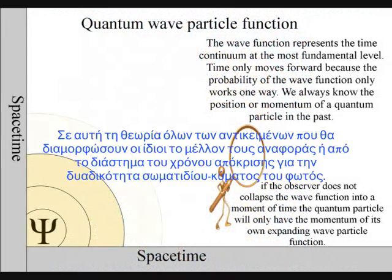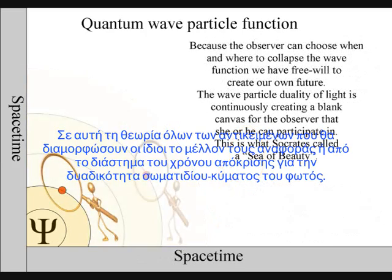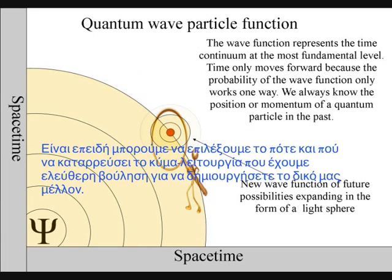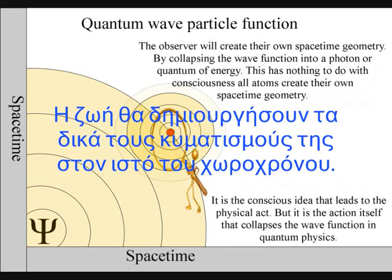It is because the observer can choose when and where to collapse the wave function that we have free will. Life will create its own ripples in the fabric of space-time, forming its own broken symmetry of its own evolutionary path or timeline.